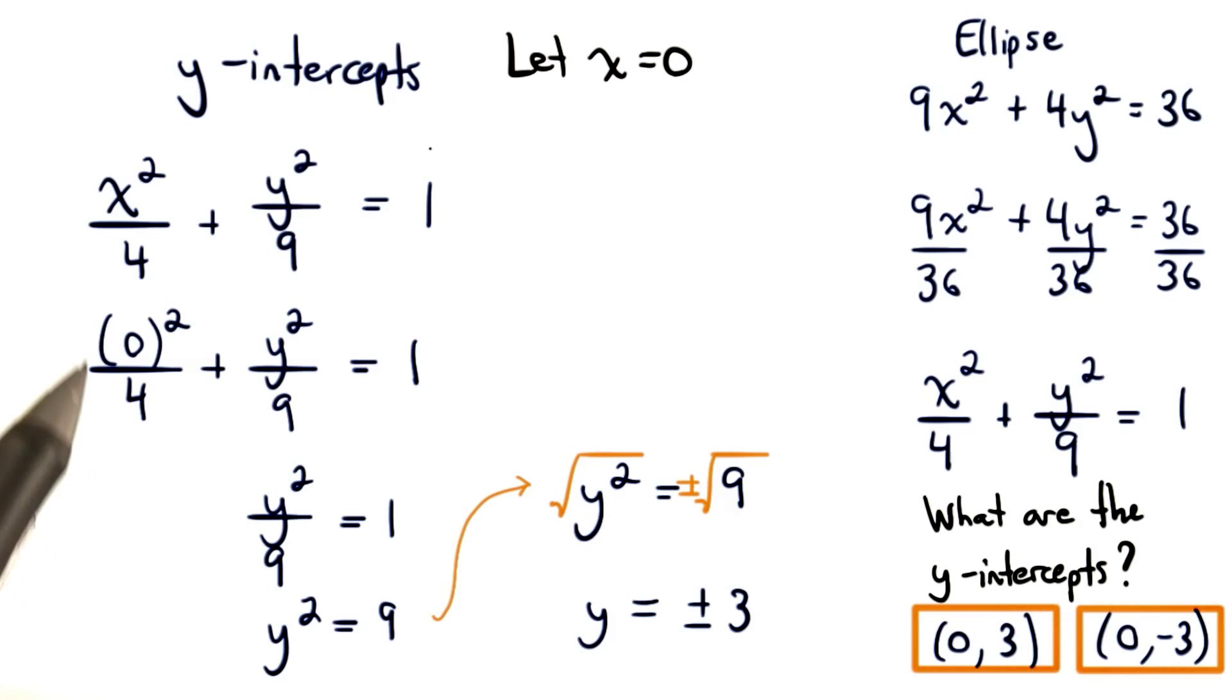0 squared is simply 0, so this fraction with a 0 in the numerator simplifies to 0. Then we'll just have the rest of our equation: y squared divided by 9 equals 1.